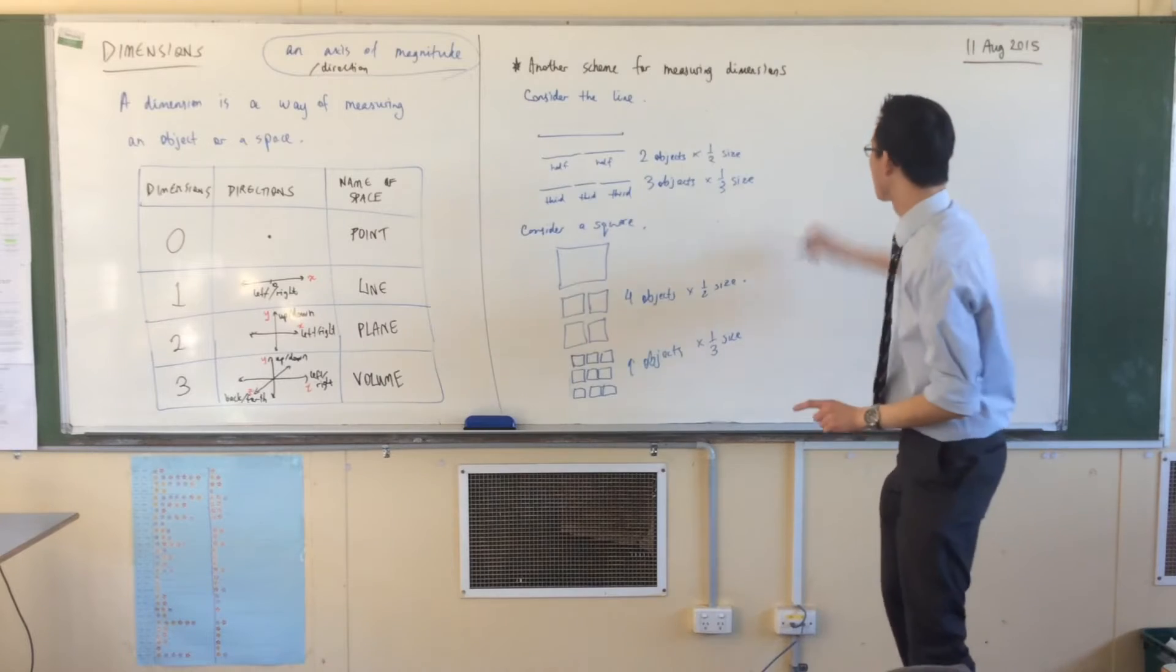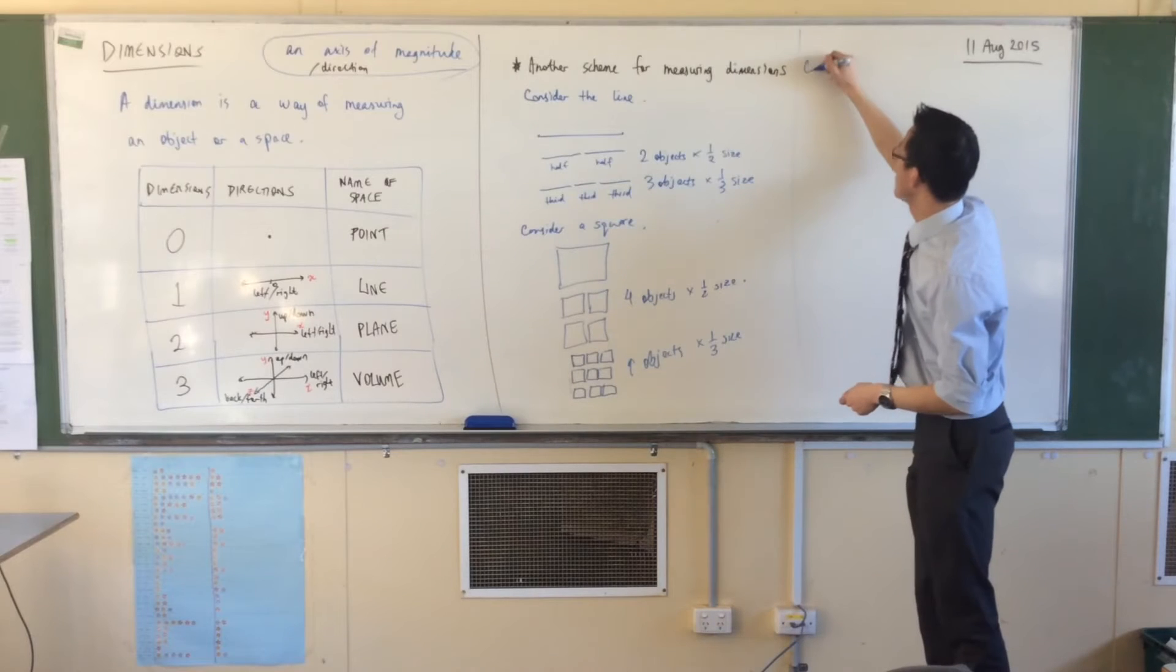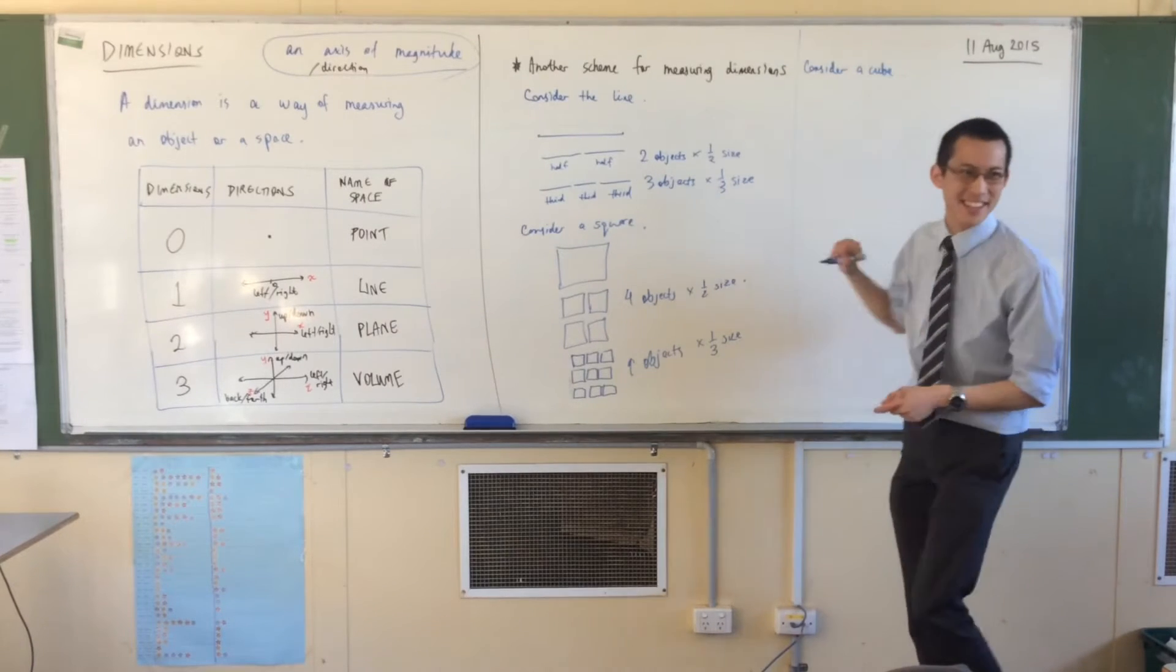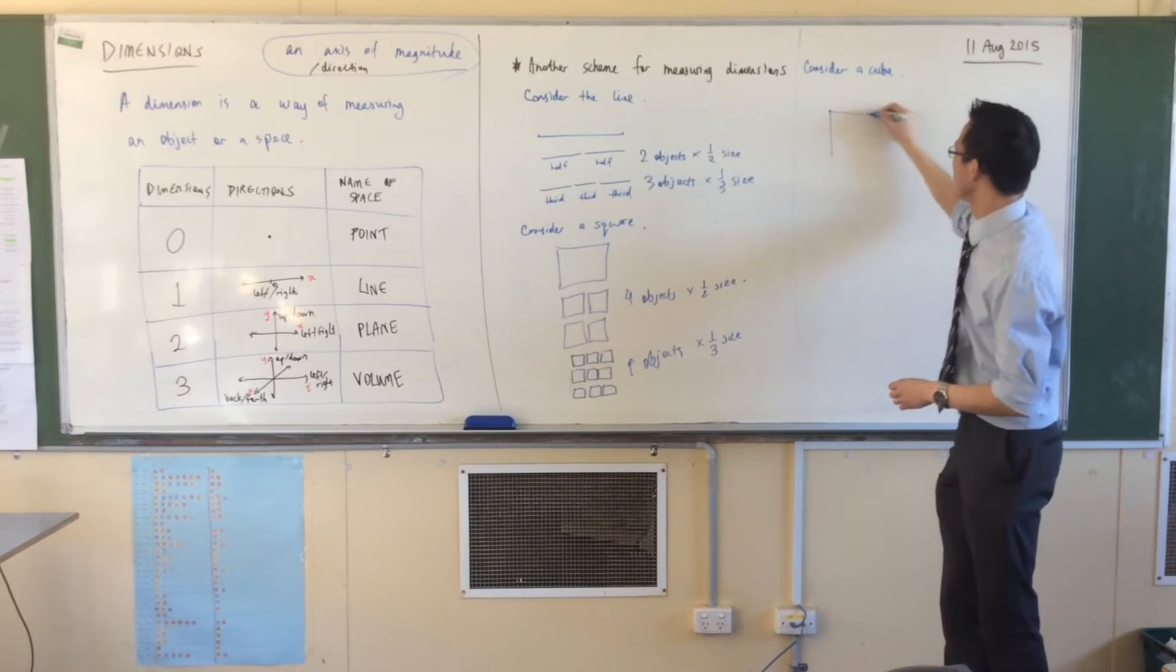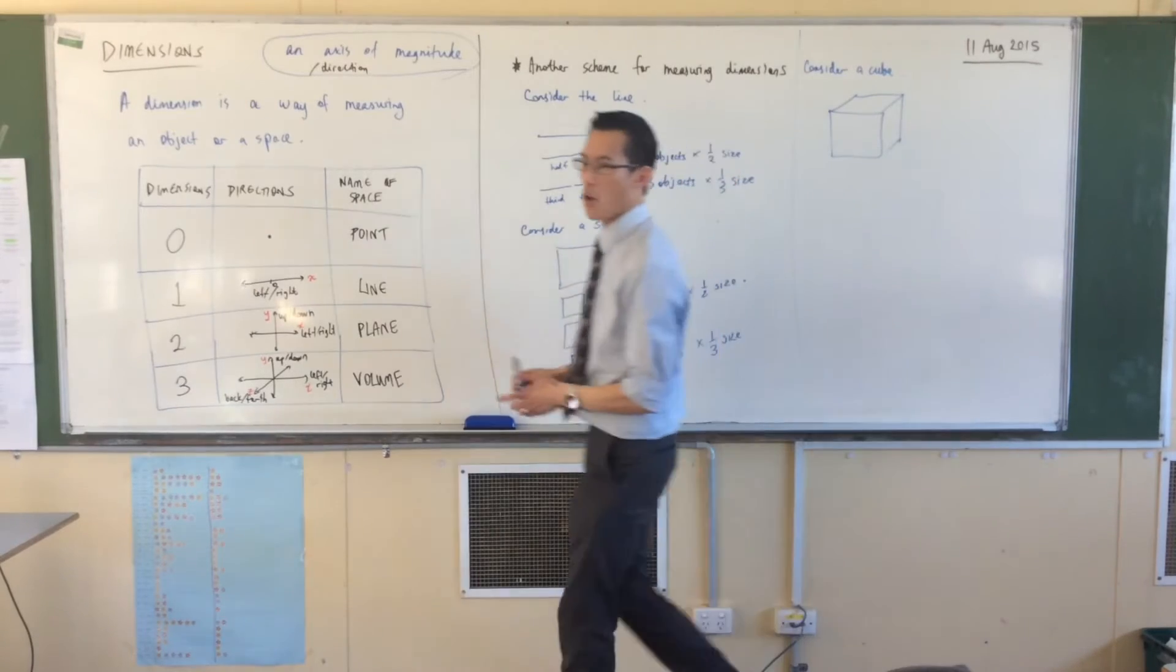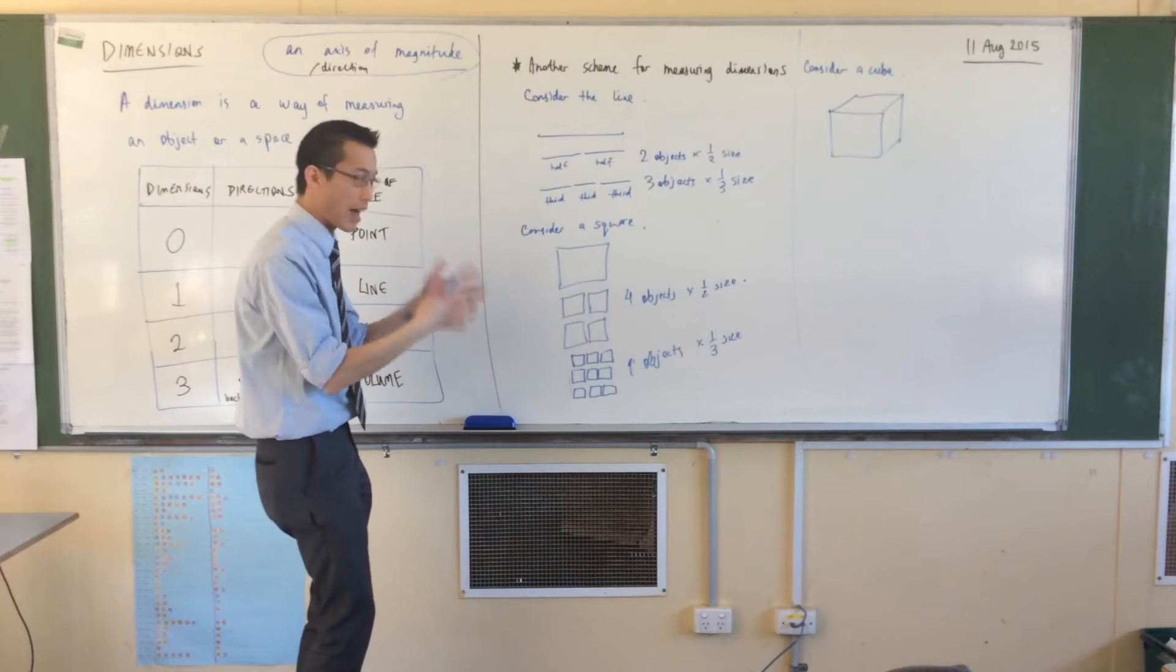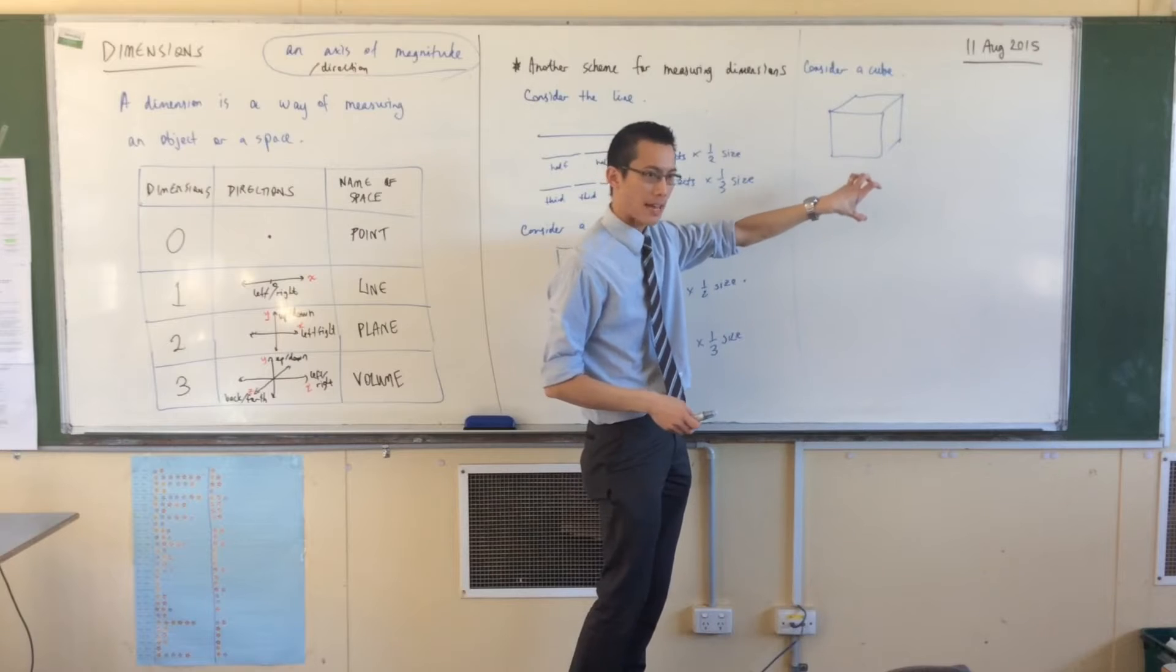We're going to do it one more time. One dimension, two dimensions, three dimensions. All right, consider a cube. This is going to get a little tricky to draw, but that's okay. So here's a cube. Now, it's got three dimensions, length, width, and height. So if I halve all of them, how many component pieces am I going to get?